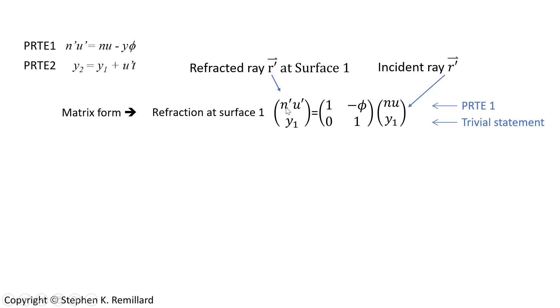The primes refer to after the interface, so n prime is the refractive index after the interface, u prime is the angle relative to the horizontal after the interface, and without the primes before. And if you look at the top row, you see paraxial ray trace equation number one. n prime u prime is n u minus refractive power times the height y.